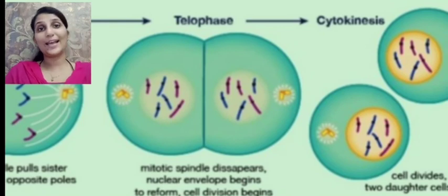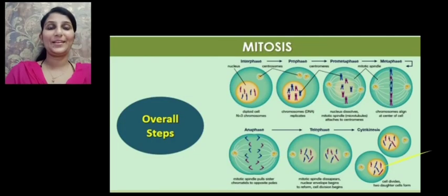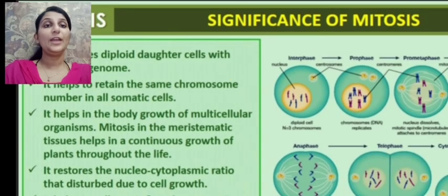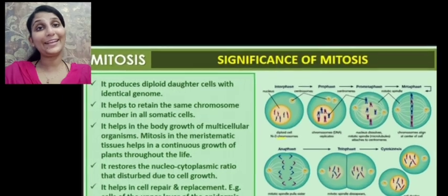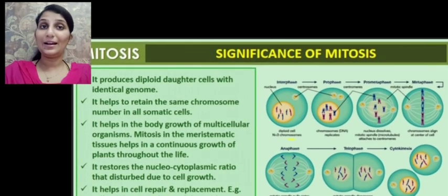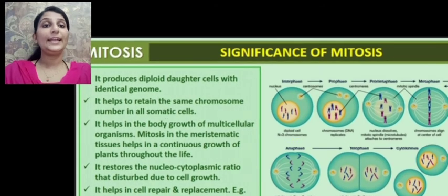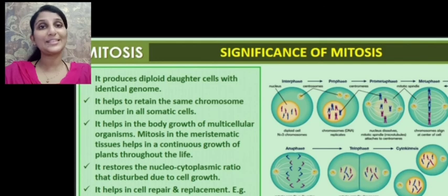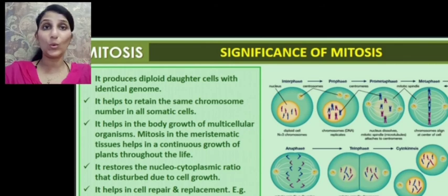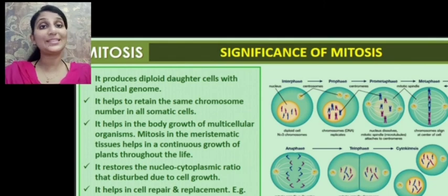This is followed by cytokinesis, in which the cytoplasm divides to form two daughter cells. The significance of mitosis is that it produces diploid daughter cells with an identical genome. Daughter cells have identical genome as that of the parental cell. It helps to retain the same chromosome number in all somatic cells, it helps in the body growth of multicellular organisms, and mitosis in the meristematic tissues in plants helps in the continuous growth of the plant. It also restores the nucleocytoplasmic ratio disturbed during cell growth in G1 and G2, and helps in cell repair and replacement.